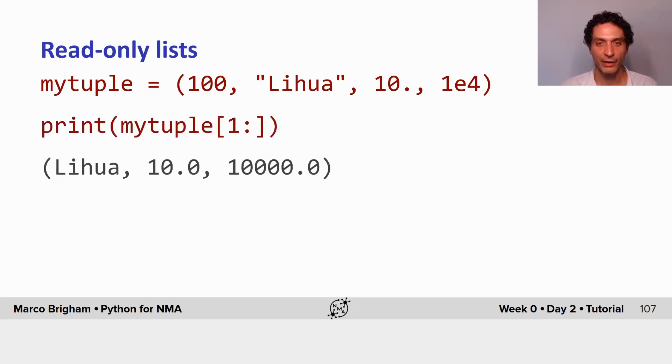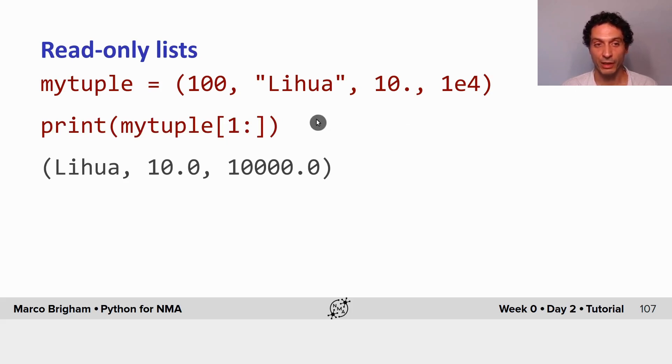And since it's a container you can also index. Here I'm printing the contents of my tuple starting from index one.